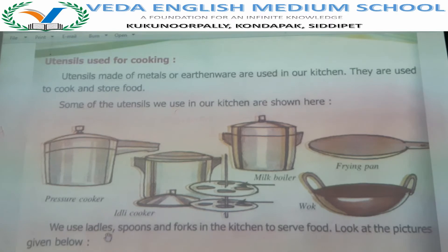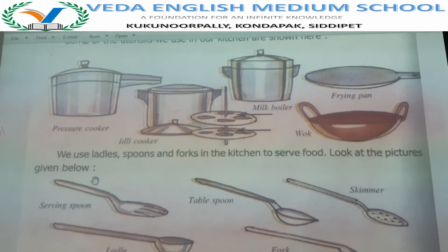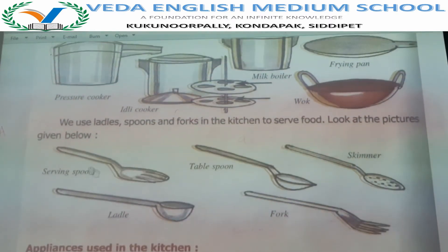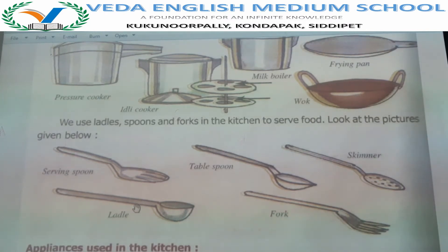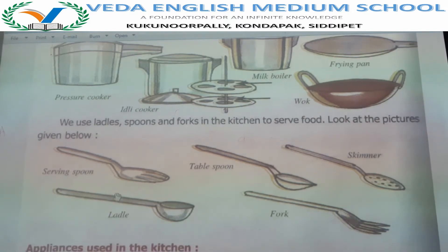We also use some things to serve the food. These include a serving spoon, tablespoon, and skimmer — which is used to remove fried things like puri or vada. And a fork and ladle, which is used to serve dal or rasam. We use these in our kitchen to serve the food.